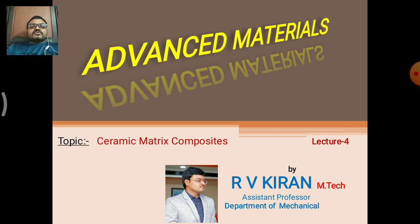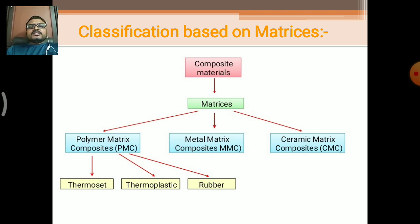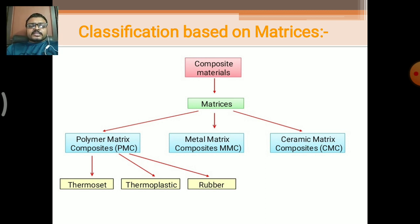Now, in this lecture, we are going to discuss about the last one, that is ceramic matrix composites. This classification is based on the matrices type. There are two types of classification in composites: first one is the classification based on reinforcement type, and the second one is based on matrices type. In this classification, the matrices are divided into three types: polymer matrix composite, metal matrix composite, and ceramic matrix composites. Polymer matrix can be divided into thermosets, thermoplastics, and rubber, as seen in the last lecture.